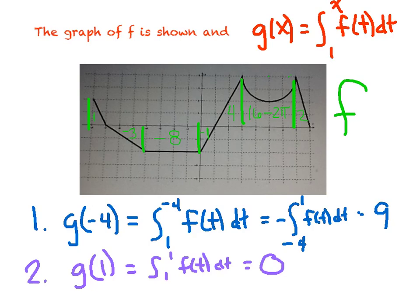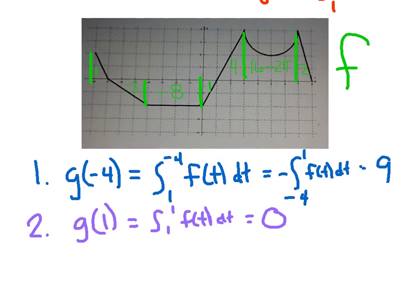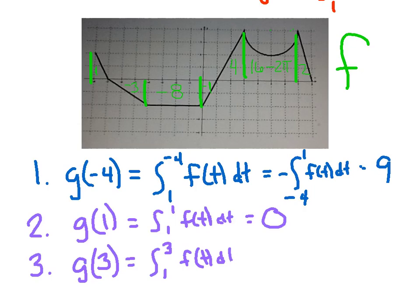Number 3: g of 3. I'm just replacing x with 3, so it's the integral from 1 to 3 of f of t dt. I'm starting at 1 and eating up area until I get to 3. That gives a nice area of 4.